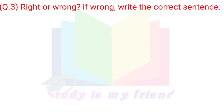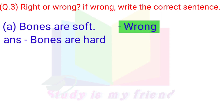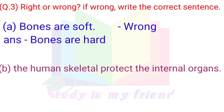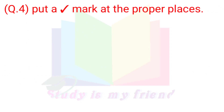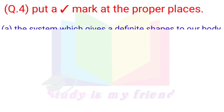Question 3: Right or Wrong. If wrong, write the correct sentence. A. Bones are soft — Wrong. Correct answer: Bones are hard. B. The human skeletal protects the internal organs — Right.